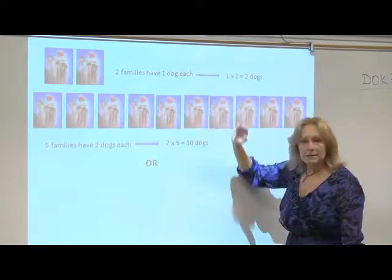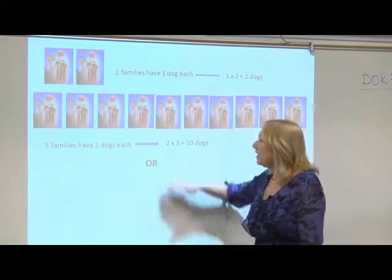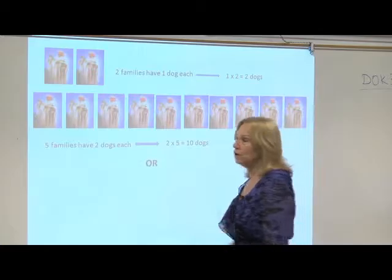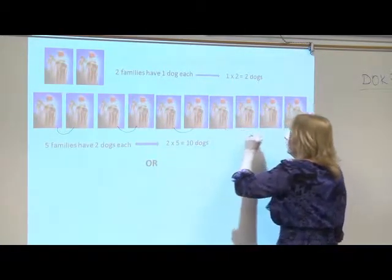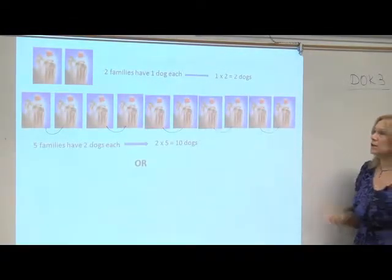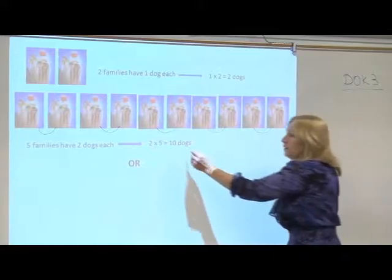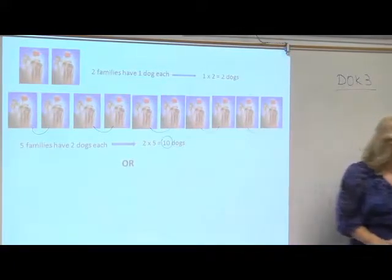Then in the second line, it says that five families have two dogs. So one family, two, three, four, five. The five families that have two dogs each have a total of ten dogs.